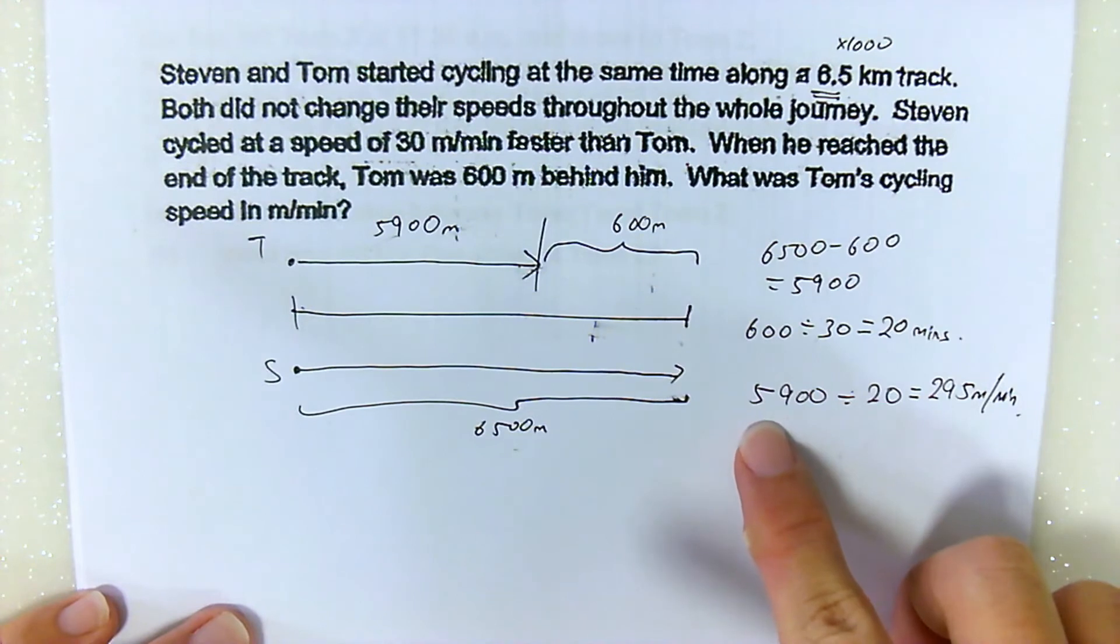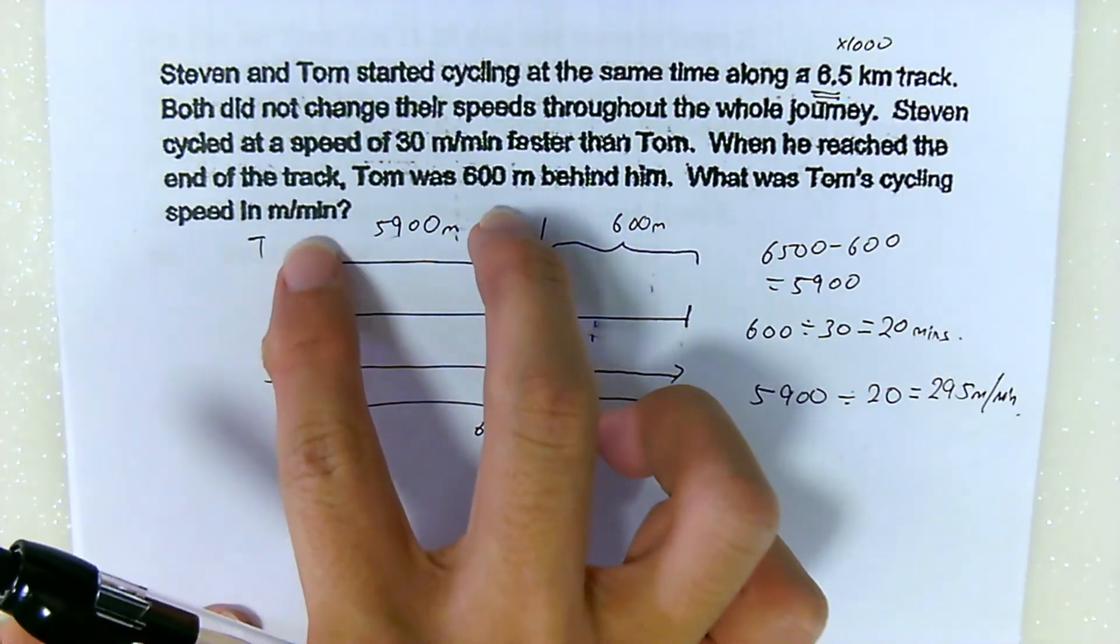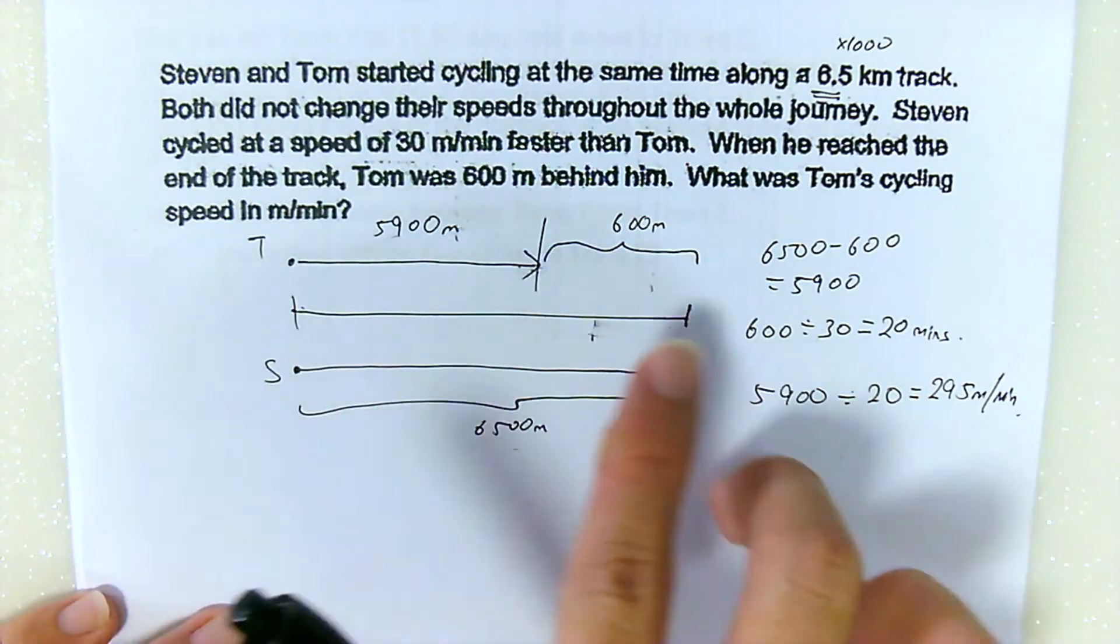And this will be meters per minute. So Tom actually cycled at this speed if you take the total distance divided by the time.